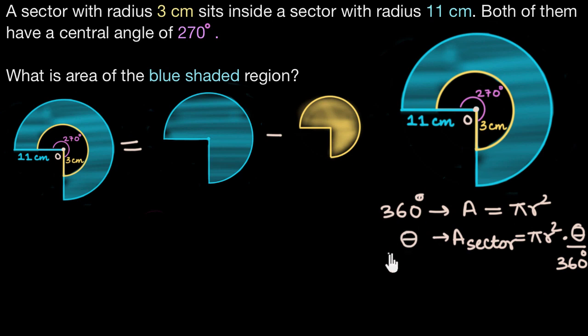So we can use this to figure out the area of these two sectors. So let's begin with this one. The radius is 11 centimeters for this sector so its area would be π r squared, here r is 11, so π times 11 squared times the angle it subtends at the center, 270 degrees, divided by the total angles in a circle which is 360 degrees.